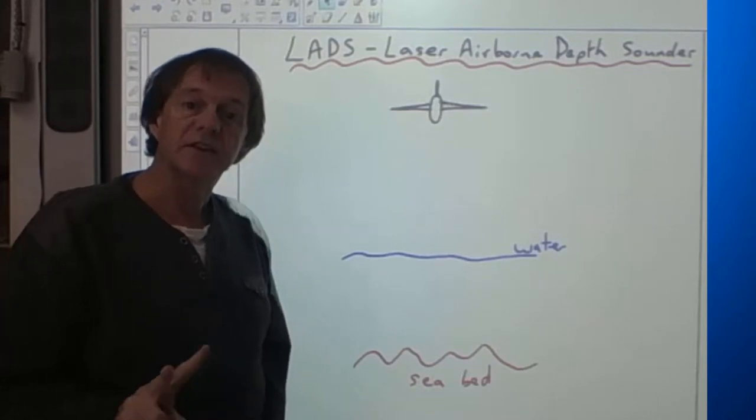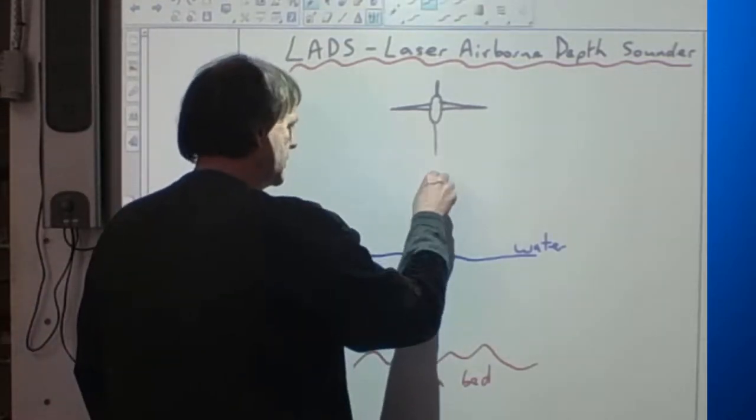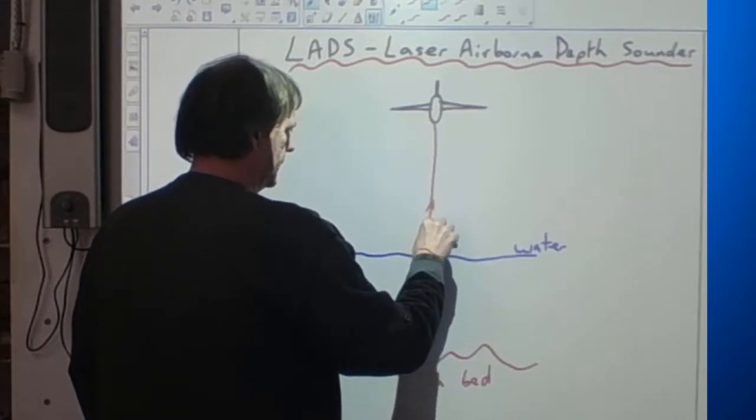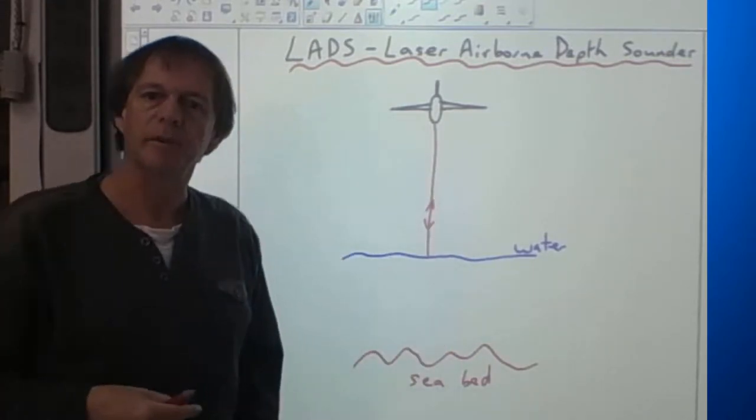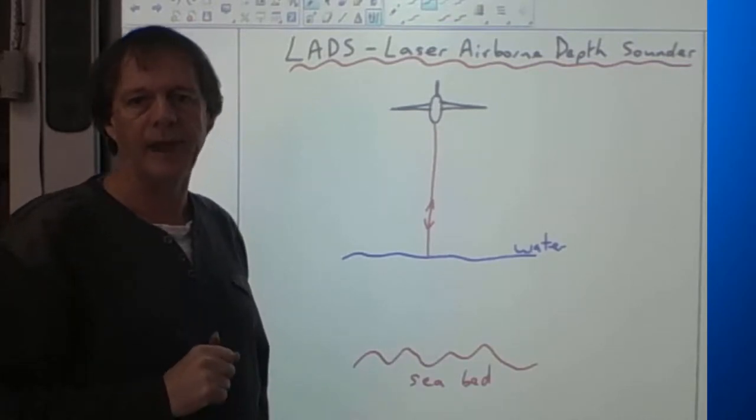Now in this case the plane actually sends down two beams. One's a red laser beam, and that goes down and reflects back. That'll give you an idea of the height of the plane. They'll try and keep the height of the plane roughly at about 500 metres at a similar altitude.